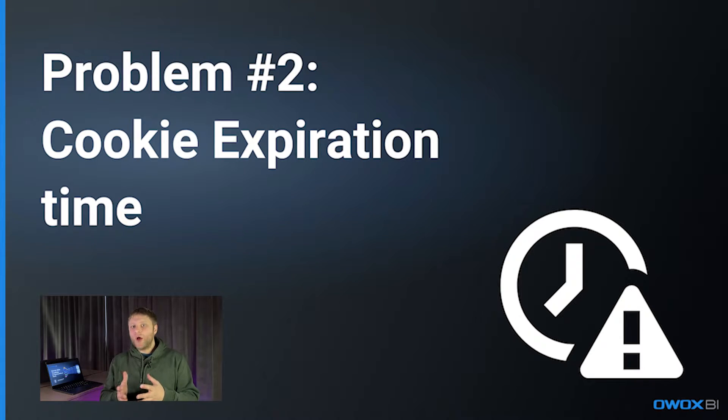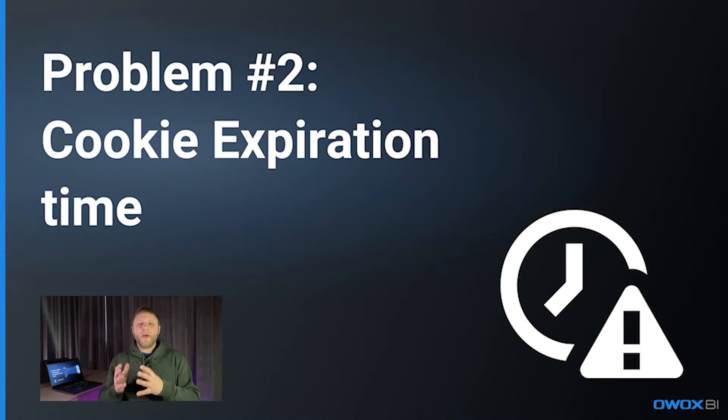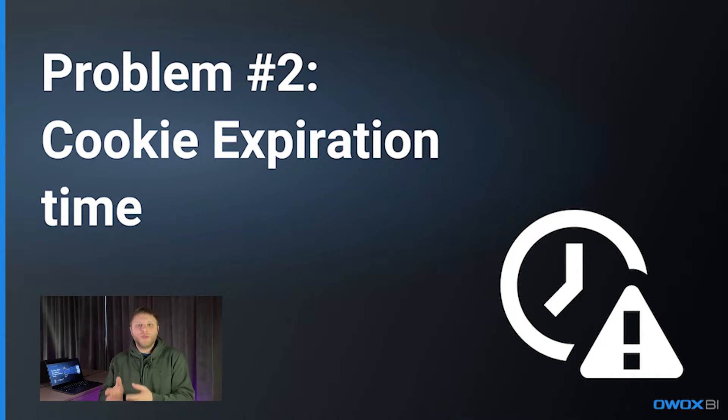Another problem is cookie expiration time. Cookies, which have long built the backbone of tracking, are now almost useless. For example, looking at Safari browser restrictions: ITP blocks all third-party cookies by default, and in some cases grants exceptions to third-party cookies with the Storage API.